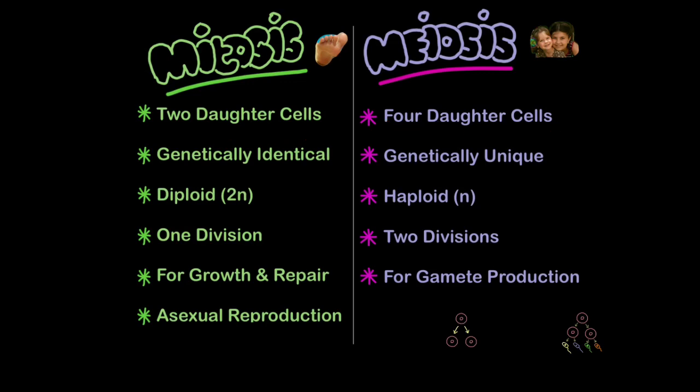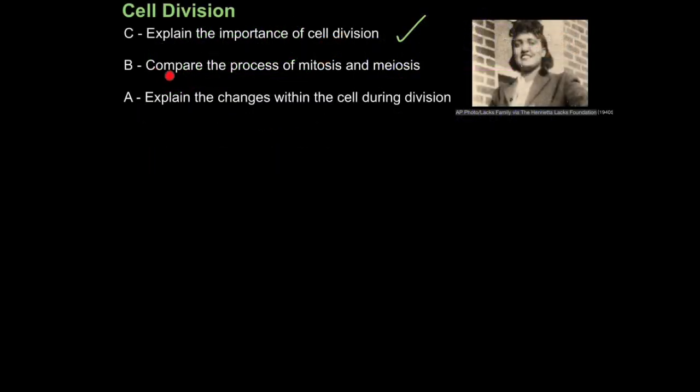In mitosis, the cells are genetically identical. Whereas in meiosis, they are genetically unique. In mitosis, the cells are diploid. Whereas in meiosis, they are haploid. Mitosis involves one division. Whereas meiosis involves two divisions. And so on. If you're really skilled, you could probably do it in one sentence. For example, mitosis produces two genetically identical diploid daughter cells. Whereas meiosis produces four genetically unique haploid gametes. Although that is one sentence, it's loaded with marking points. And that is how you compare the process of mitosis and meiosis.